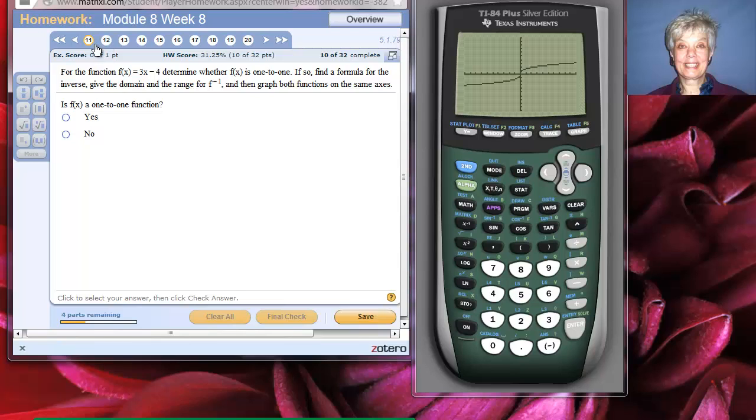Let's go on to 11. For the function f of x equals 3x minus 4, determine whether f of x is one to one. It is. Why? Because this is the equation of a straight line with a positive slope. So it's constantly increasing across its domain. However, we'll graph it and you'll see. If so, find a formula for the inverse, give the domain and the range for f inverse, and then graph both functions on the same axes. I'm going to clear that. Now, 3x minus 4. Graph. That's the line 3x minus 4. It's definitely constantly increasing along its domain. Therefore, it's one to one.